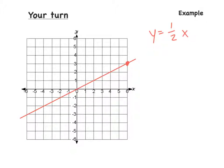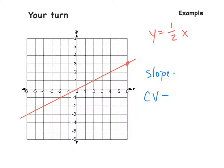Alright, so we have the equation y equals one-half x, and then we have a graph with a point of (6, 3). We have to find the slope and the constant of variation. What's the easiest thing we can do first? We can find the constant of variation. Remember, y equals kx, so k is the constant of variation. Our one-half is our constant of variation. And our slope, which we learned in the previous example, is the same thing as the constant of variation, so our slope is one-half.